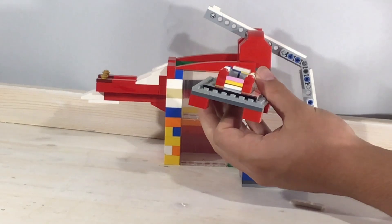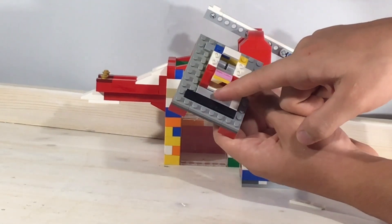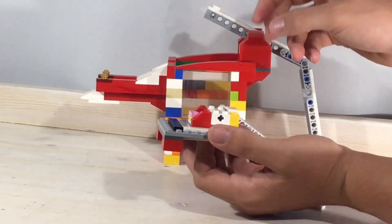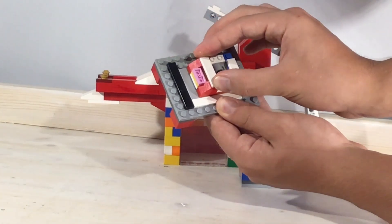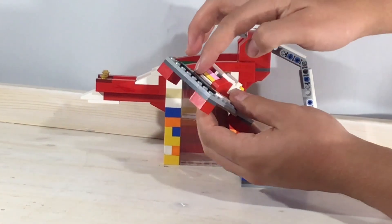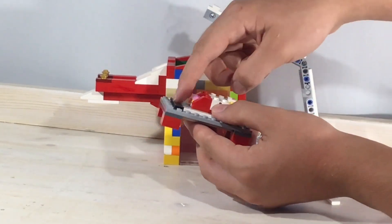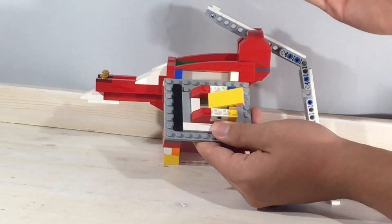The valve makes contact with this 1x2 tile and through the power of gravity will fall on its own. This 1x4 tile is here to make sure that the valve can open but will not open so much as it will stay like this and be useless.